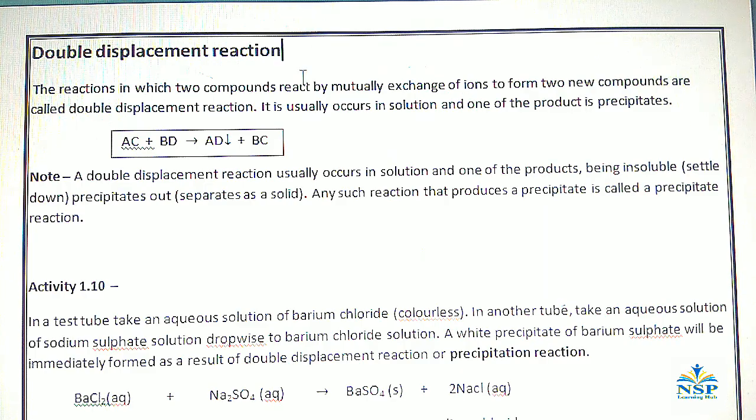Double Displacement Reaction. The reaction in which two compounds react by mutually exchange of ions to form two new compounds are called double displacement reaction. It usually occurs in solution and one of the products is precipitate.